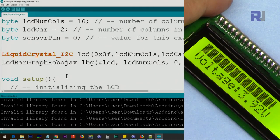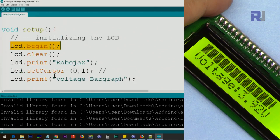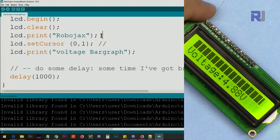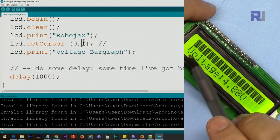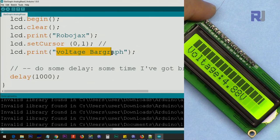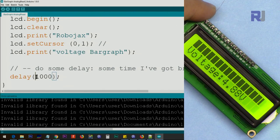Inside the setup we initialize the LCD by typing lcd.begin. This is initializing it. This is clearing the screen from previous value, and this text is printed on the first line. Then we go to character zero, line one, and we print voltage bar graph that you saw on the screen. Then we give the viewer one second to read it.